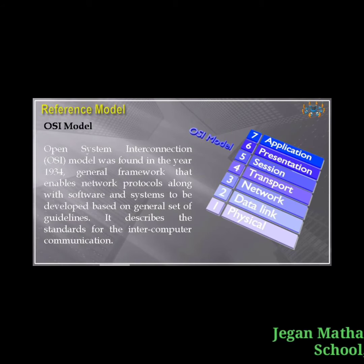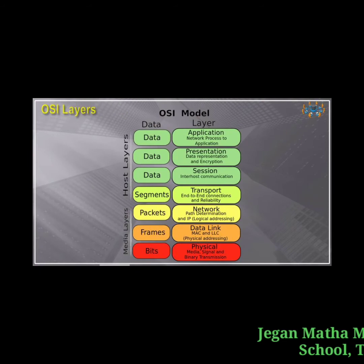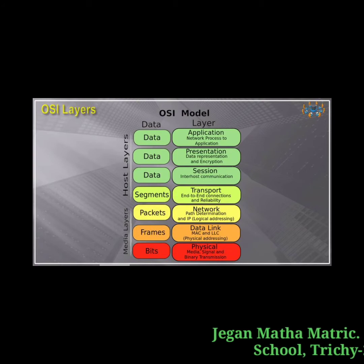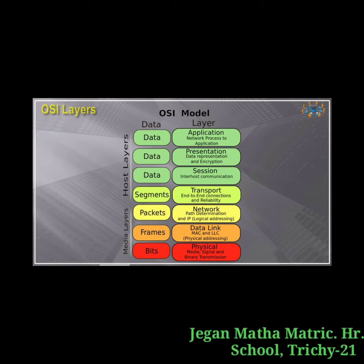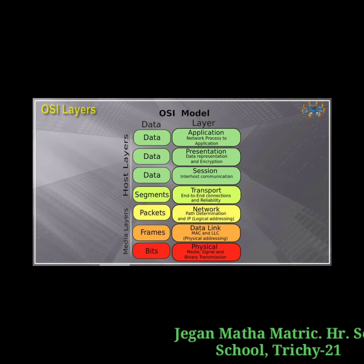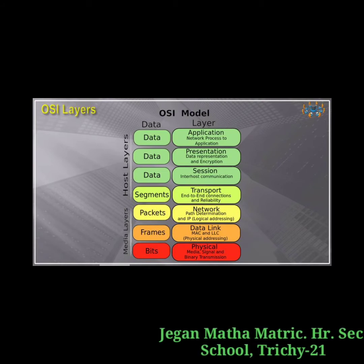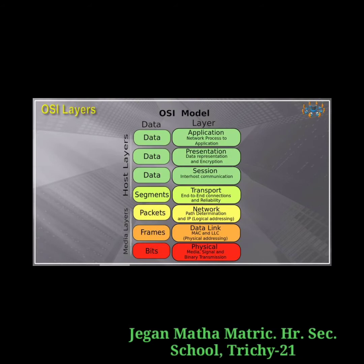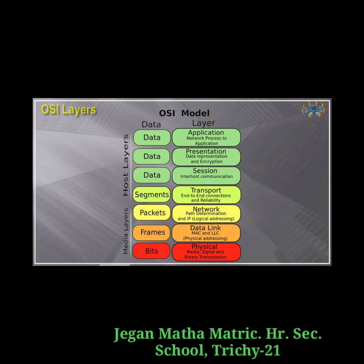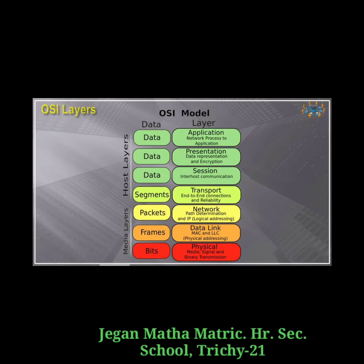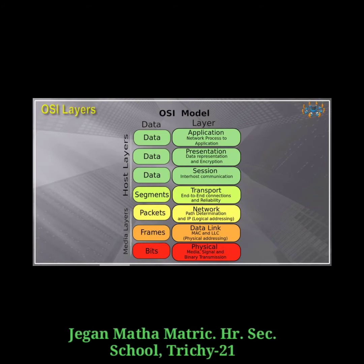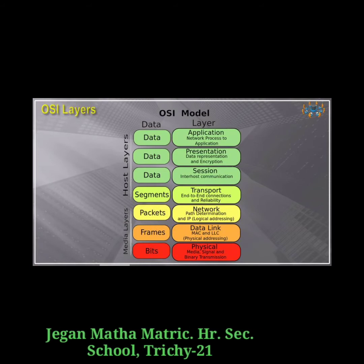Let us see each layer one by one. The first one is the physical layer. This is the first layer and it defines the electrical and physical specifications for devices. The second one is the data link layer. It is the second layer and it guarantees that the data transmitted are free of errors.